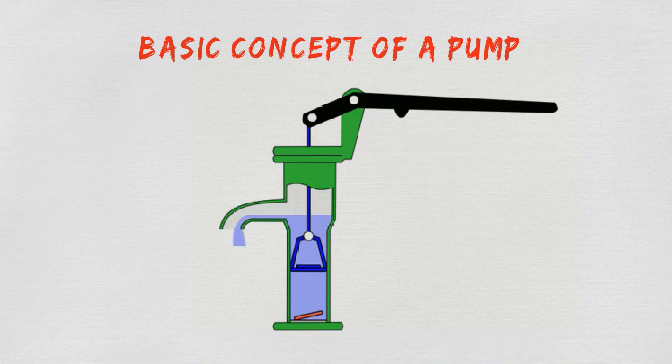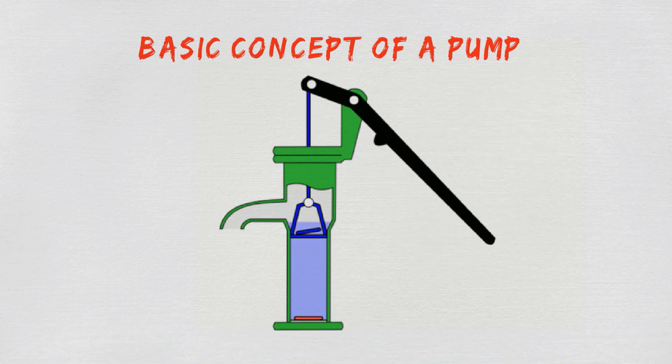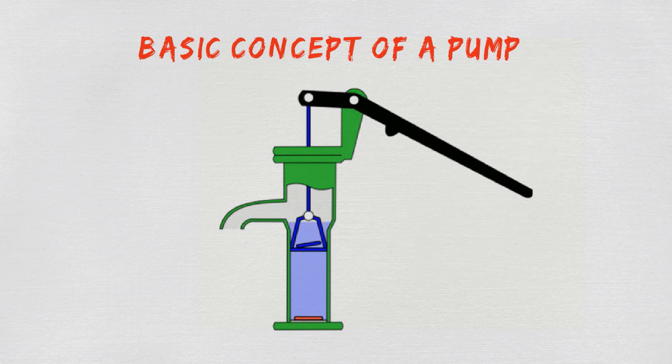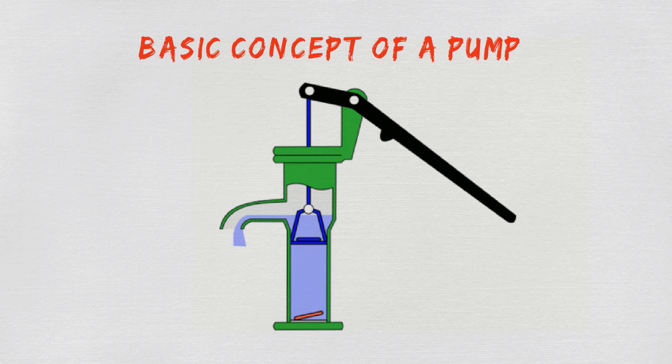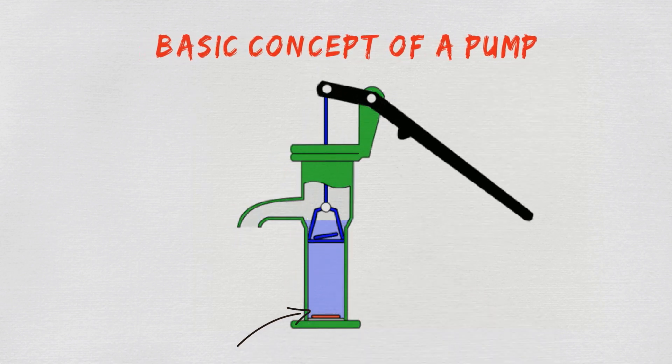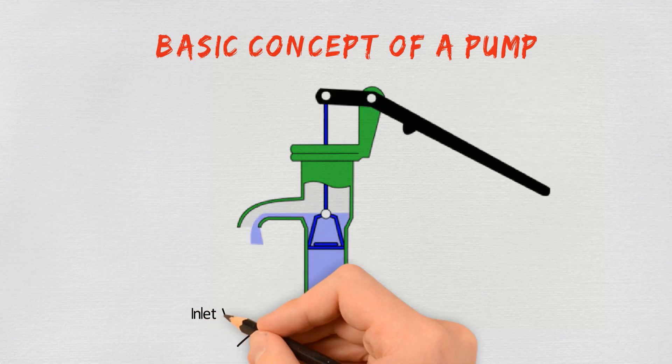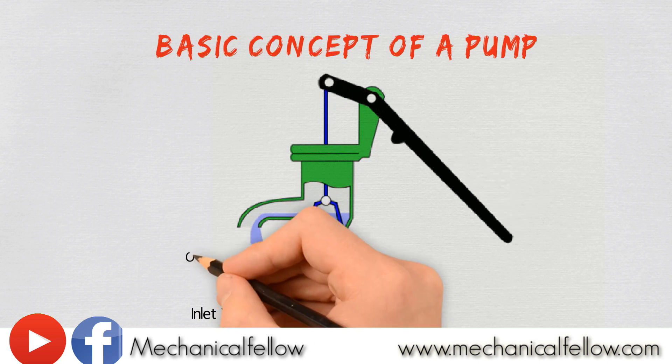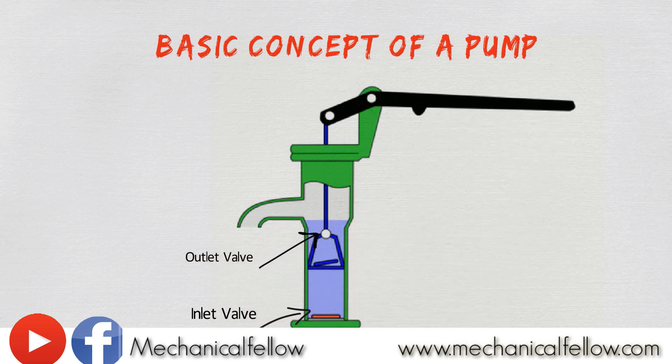this animated picture, this is a very basic example of a positive displacement pump. In the bottom, the red one is the inlet valve and the blue one is the outlet valve.